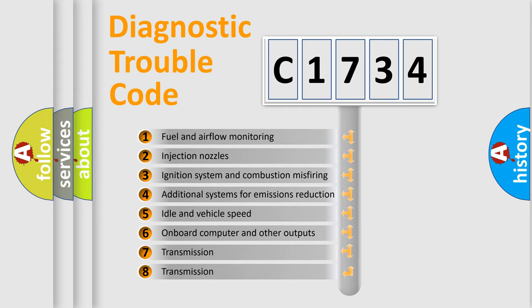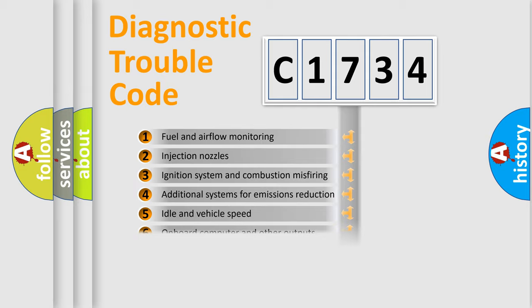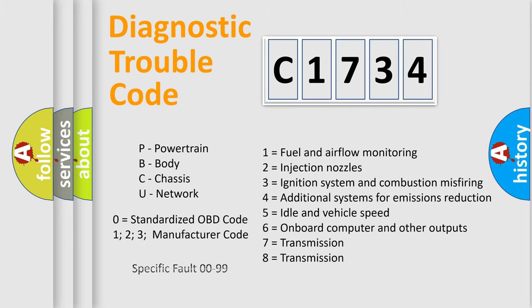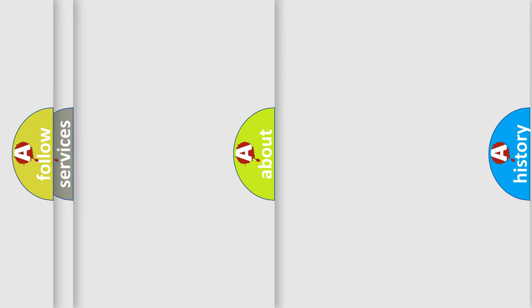The third character specifies a subset of errors. The distribution shown is valid only for the standardized DTC code. Only the last two characters define the specific fault of the group. Let's not forget that such a division is valid only if the second character code is expressed by the number zero.